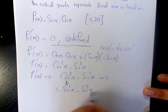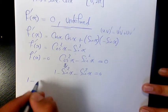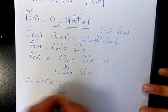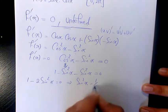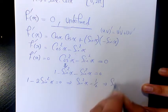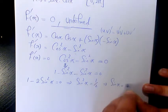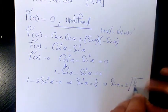This gives us 1 - 2sin²(x) = 0, which means sin²(x) = 1/2. Taking the square root, we get sin(x) = ±√(1/2), or sin(x) = ±1/√2.